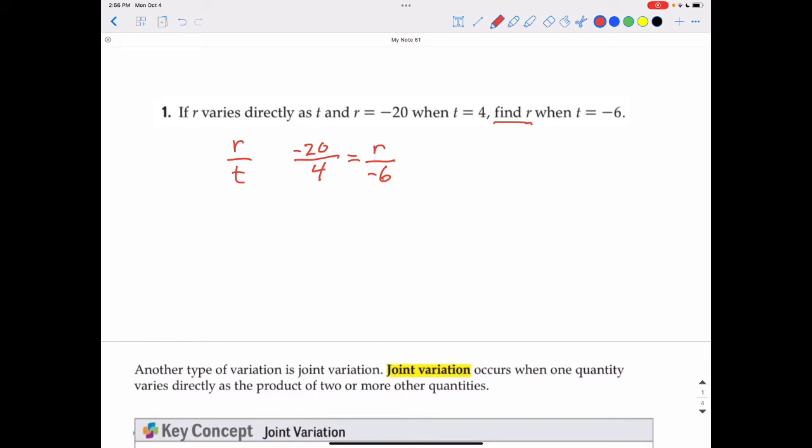I'll cross-multiply. So I'll have 4R equals negative 20 times negative 6 is positive 120. Divide by 4. So the answer is R equals 30.